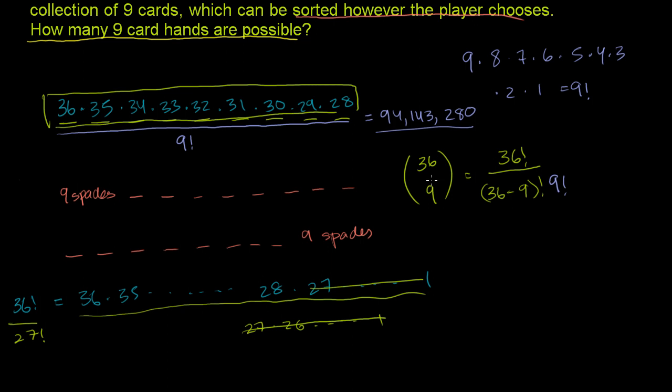And this right here is called 36 choose 9. Sometimes you'll see this formula written like this: n choose k equals n factorial over (n-k) factorial, and also in the denominator, k factorial. This is a general formula that if you have n things and you want to find out all the possible ways you can pick k things from those n things, and you don't care about the order - all you care is about which k things you picked, you don't care about the order in which you picked those k things.